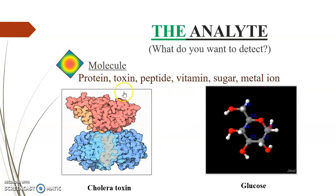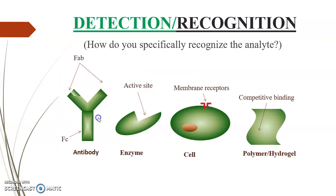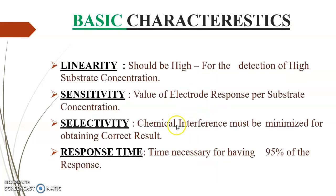Some common analytes include proteins, toxins, peptides, vitamins, sugars, and metal ions. Samples are handled by microfluidics and could be injected by micro-burets. Sensing can be achieved through optical, electrical, electromechanical, thermal, magnetic, and pressure measurements.